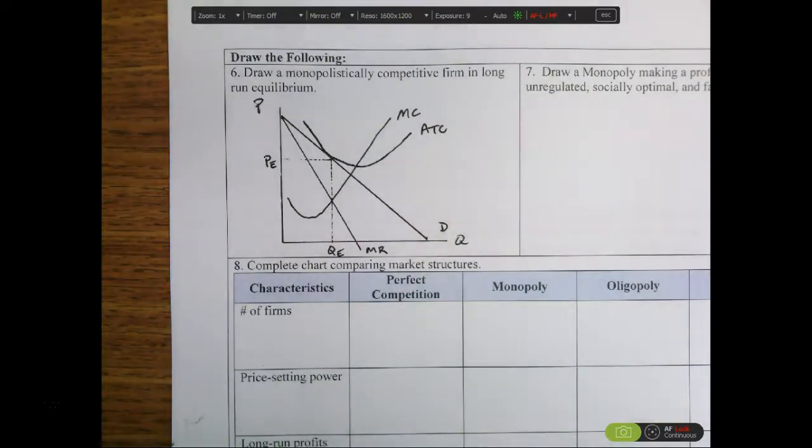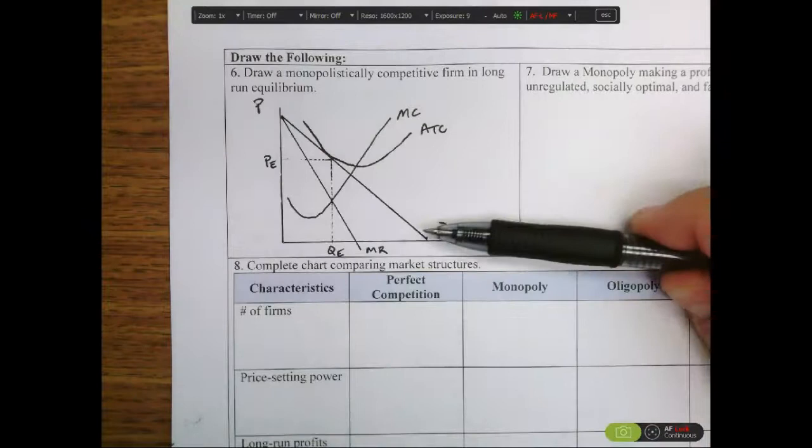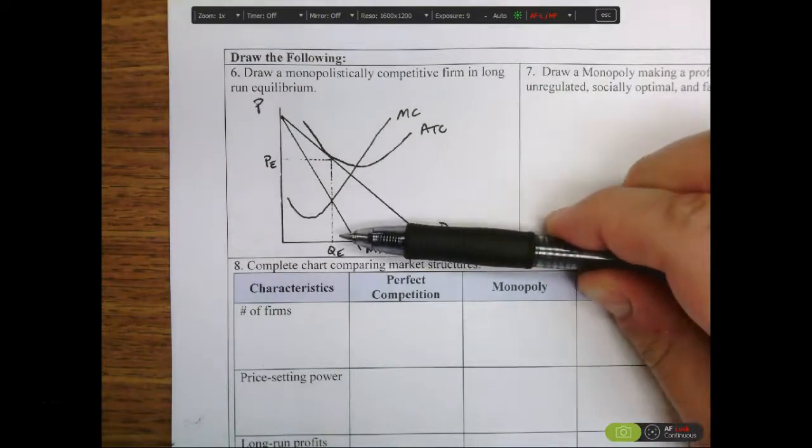There's going to be no profit in the long run for a monopolistically competitive firm because if there's profit, more firms will enter in, and that would cause the demand curve and marginal revenue curve to shift to the left.